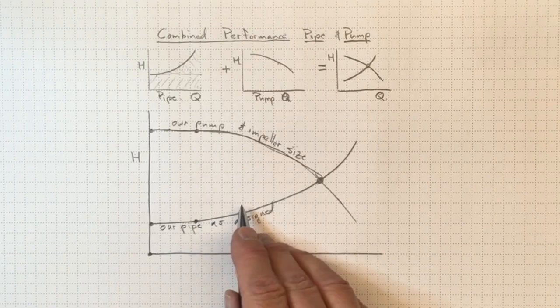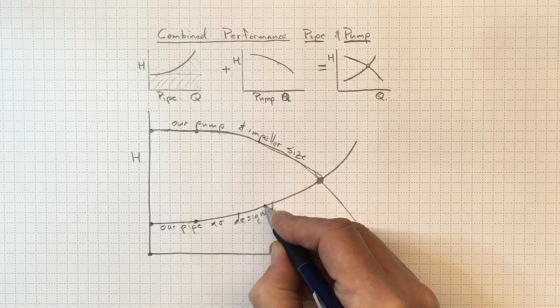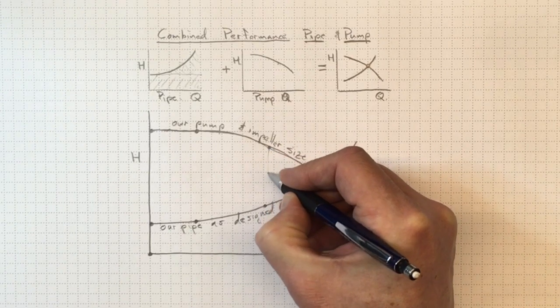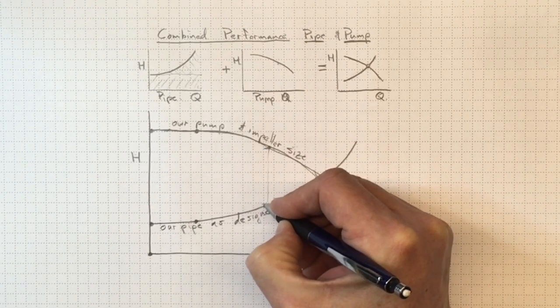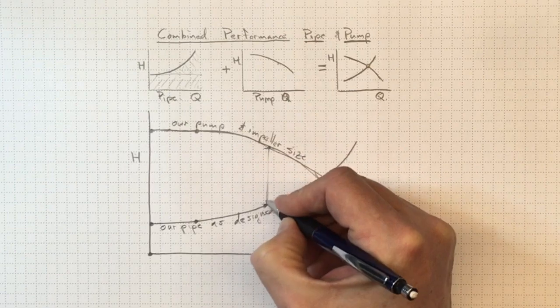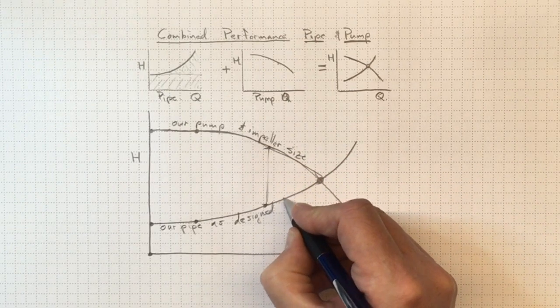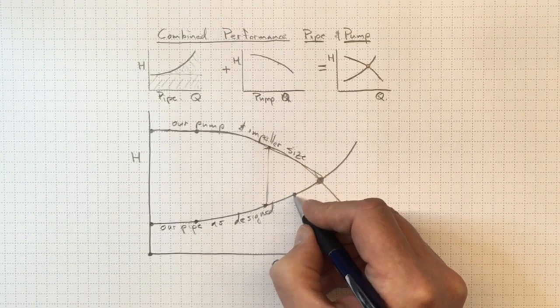So we're going to continue to accelerate that water and it's going to go faster. Now we've got higher losses, so the difference here between what the pump can produce and what the piping system requires is getting smaller. So the force that's accelerating the water in the pipe is smaller. So it's going to move not quite as far in increasing the flow in our next little iteration.